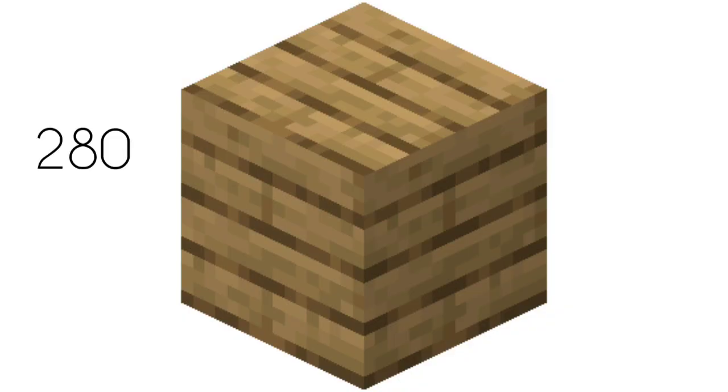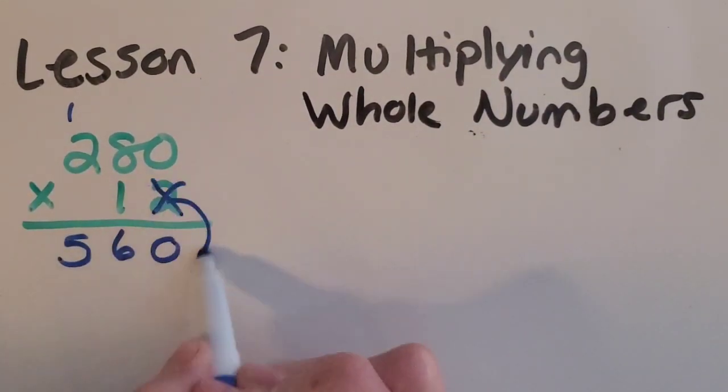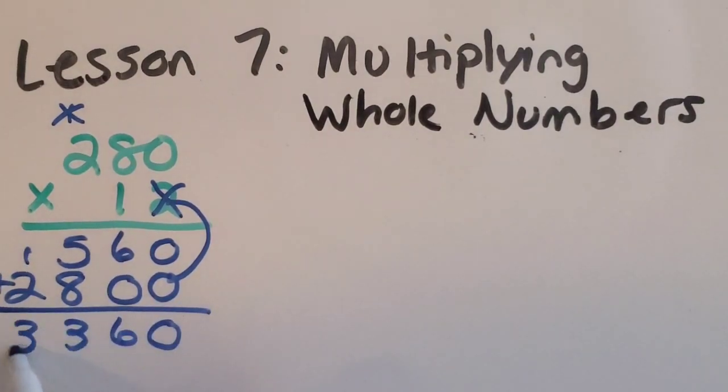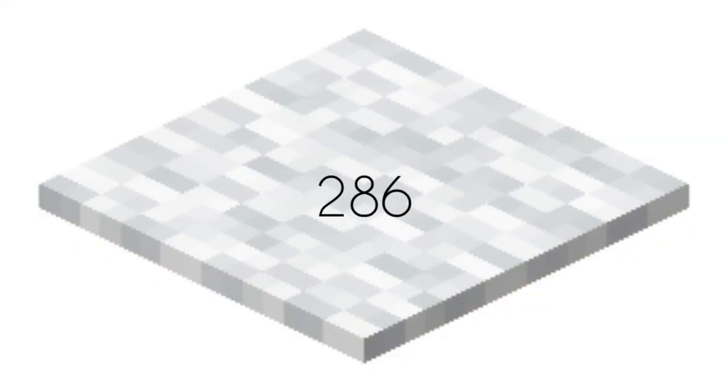We also need 280 wood planks per cabin. How many do we need for 12 cabins? We also need 286 carpet pieces. How many do we need for 12 cabins? Pause the video and help us out.